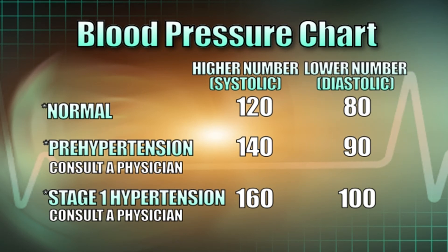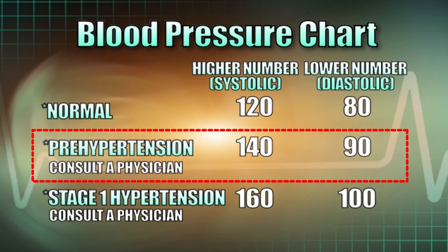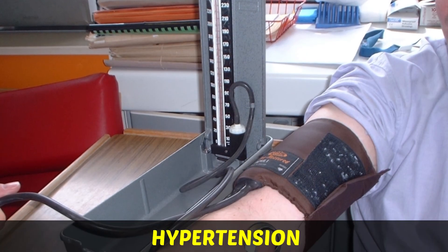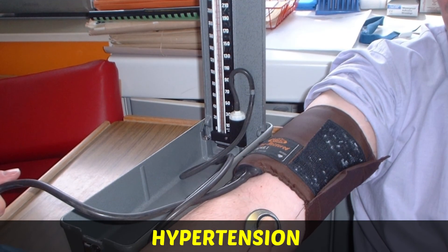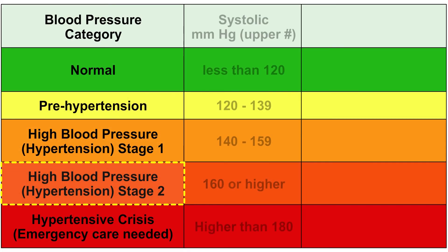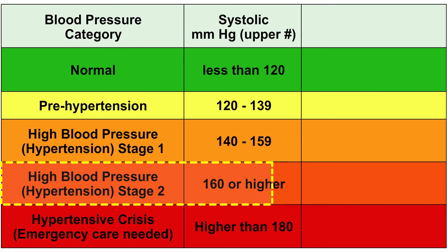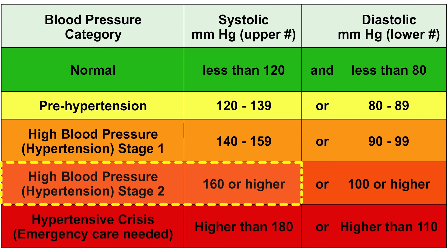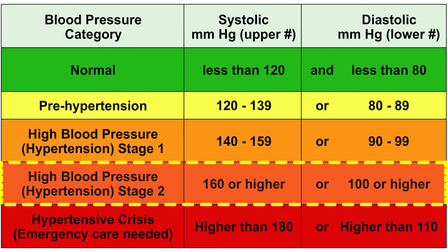This often rises normally with age to about 130 over 90 at age 60. Abnormally high blood pressure is known as hypertension. Hypertension is defined as a systolic pressure equal to or greater than 160 mm mercury, and/or a diastolic pressure equal to or greater than 95 mm mercury.